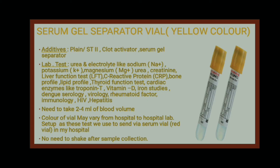The next is the yellow color vial, or serum gel separator vial, which contains a clot activator and serum gel separator. The lab tests include urea and electrolytes (sodium, potassium, magnesium, urea, creatinine), liver function tests (serum bilirubin total/indirect/direct), CRP, bone profile, lipid profile, renal function, cardiac enzymes like troponin T, vitamin D, iron studies, dengue serology, virology, rheumatoid factors, immunology, HIV, and hepatitis. We need 4 ml of blood and do not need to shake it. Note: the color may vary by hospital — some use the red serum vial instead.